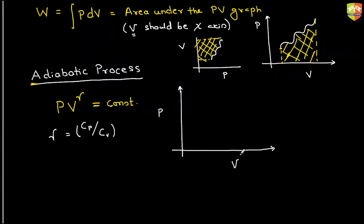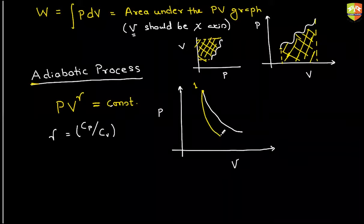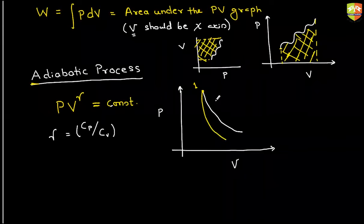So if you plot the graph of PV raised to power gamma, let's say this is P and this is V, it will also represent a curve. Now tell me one thing. Suppose from point one, there are two processes that are starting. One is isothermal and other is adiabatic. You have to tell me which one is adiabatic and which one is isothermal. The white one is adiabatic or the yellow one is adiabatic? Yellow. Don't guess. Prove it now.